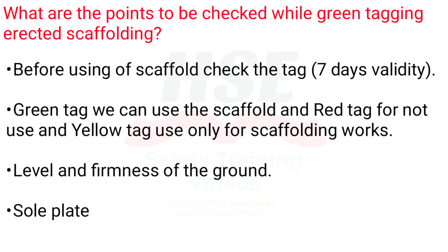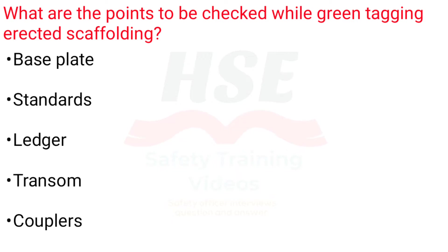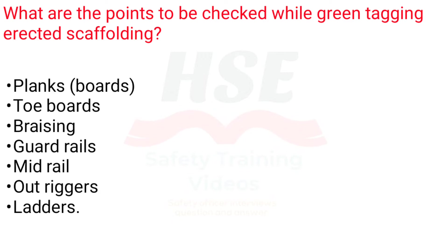Check the following components: level and firmness of the ground, sole plate, base plate, standards, ledger, transom, couplers, planks and boards, toe boards, bracing, guardrails, midrail, outriggers, and ladders.